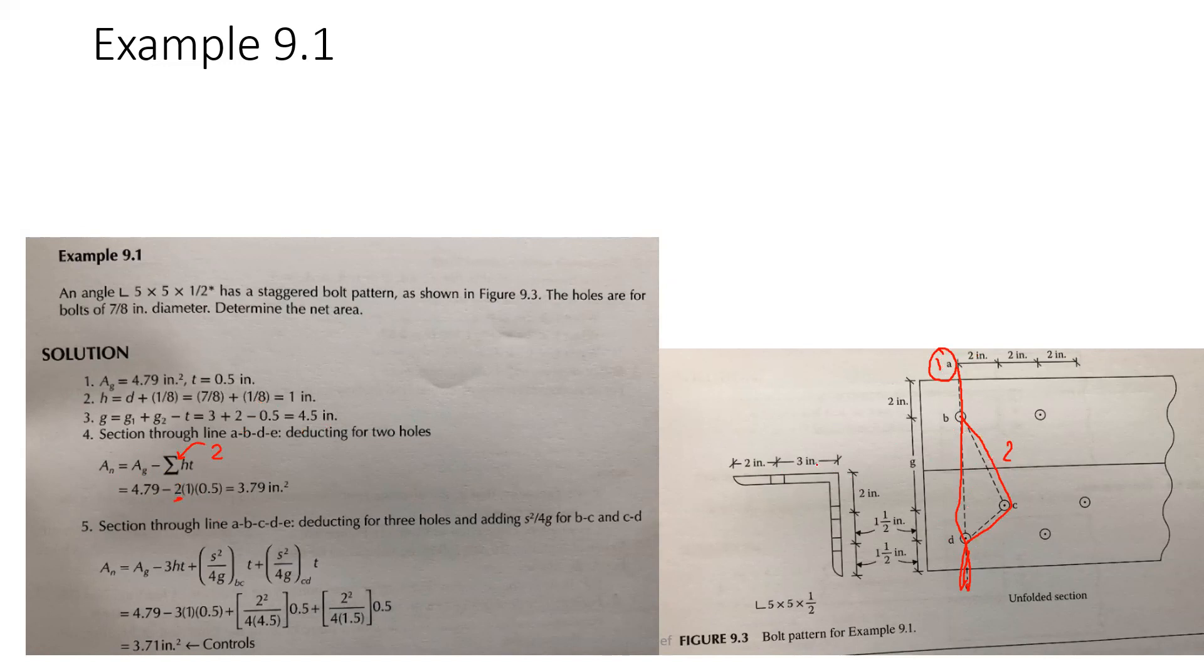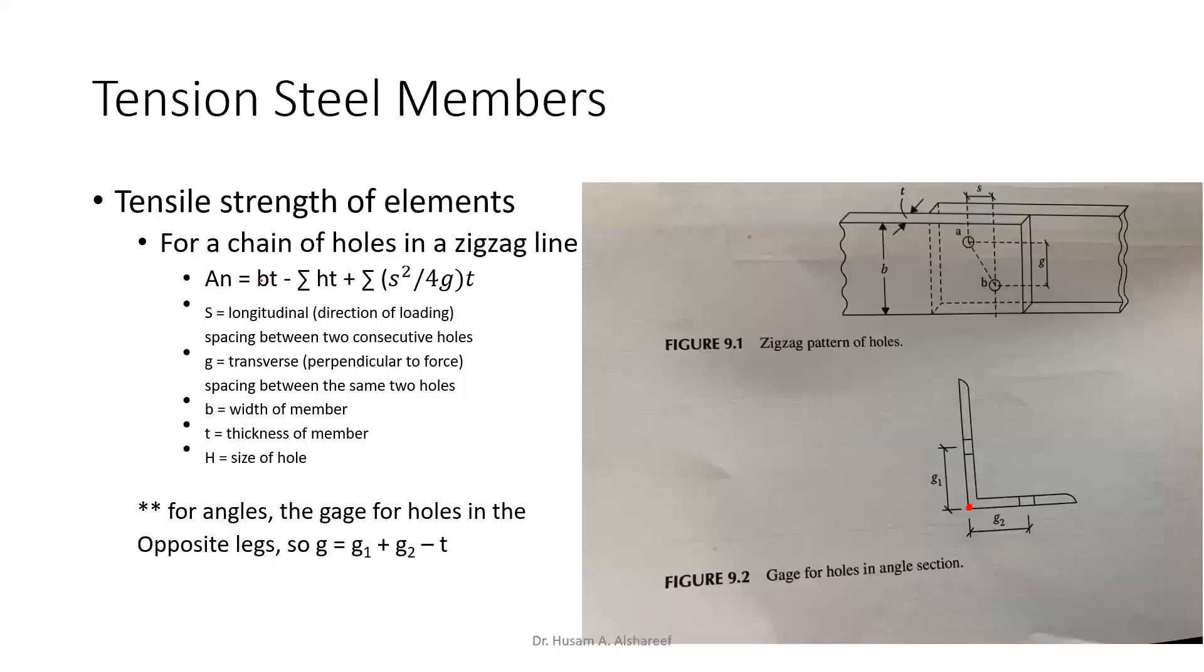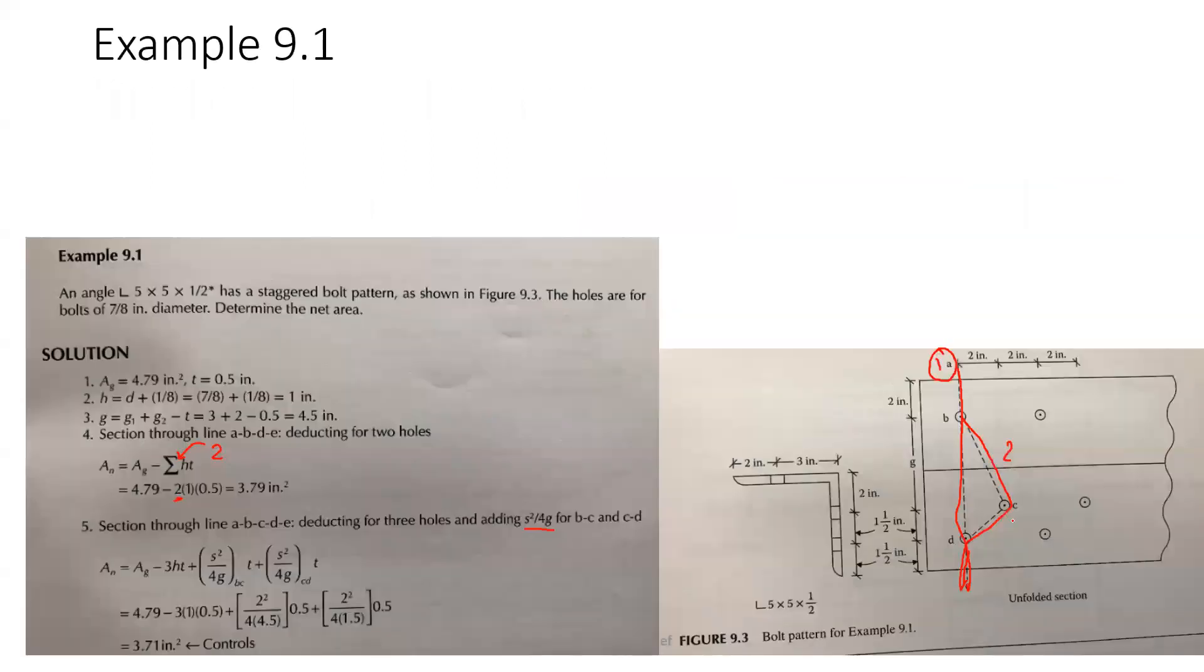Now let's find the net area for the second failure mode. And because it's a staggered area, we have to add the S squared over 4G. Where did we get this from? Well, if you remember from the previous slide, we said for a chain of holes in the zigzagging line, we add to that scenario this value. Now if you look at this figure, we have one extra hole. So then we added one. But in our example here, we have two, one and two extra, then we're going to have to add two values, two equations, two of those to the equation, and multiply by three. Why? Because we have now three holes: one, two, three. So we have three holes. Here we multiply by two because we have two holes.